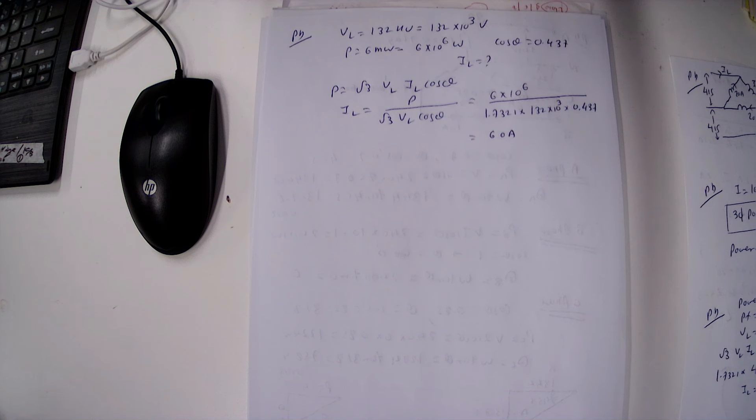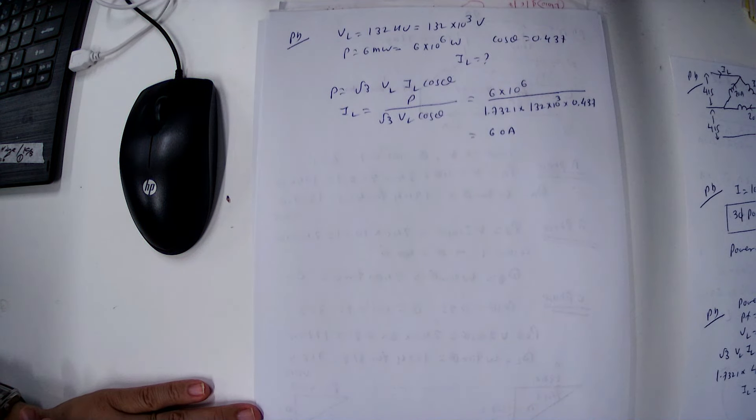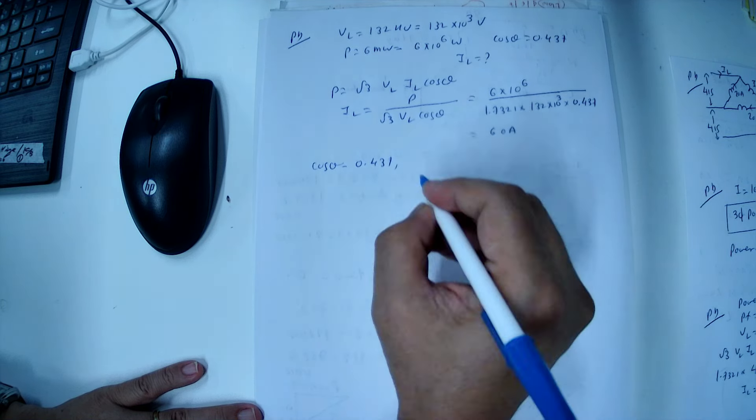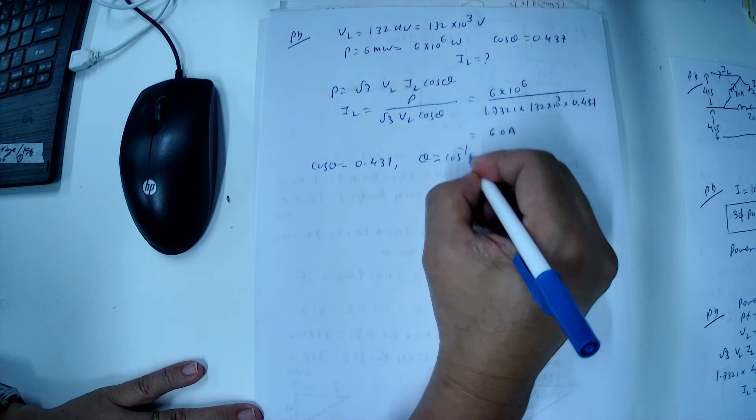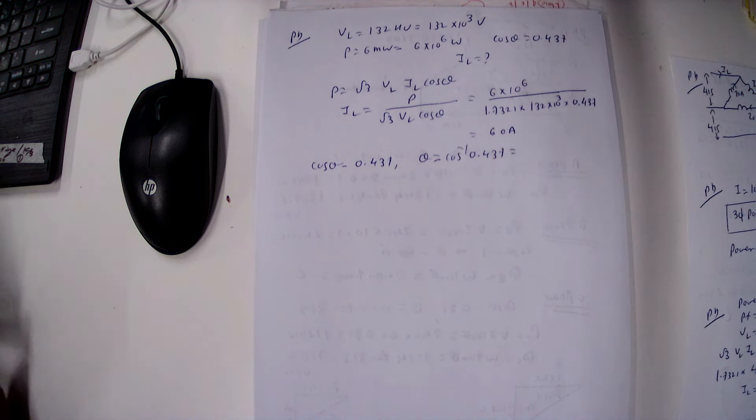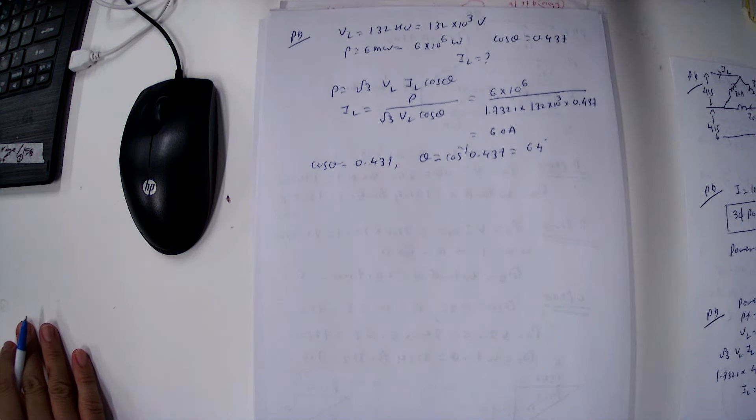Now we need to improve the capacitor bank required to improve the overall power factor to 0.94. From here, we can calculate reactive power and apparent power. Cos theta equals 0.437. We can calculate the phase angle theta. Theta equals cos inverse of 0.437, so we get theta equals 64 degrees.